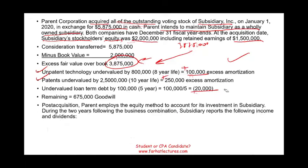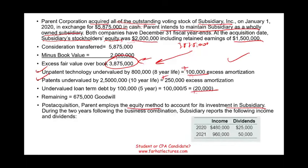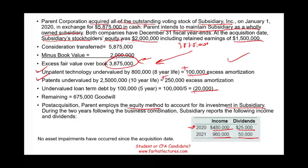Post-acquisition, the parent company employs the equity method to account for its investment in the subsidiary. During the two years following the acquisition, the subsidiary reported: in 2020, income of $480,000 and dividends of $25,000; in 2021, income of $960,000 and dividends of $50,000. No asset impairments have occurred since the acquisition date. I'm going to show you the journal entries made on a yearly basis under the equity method.